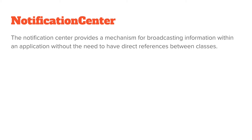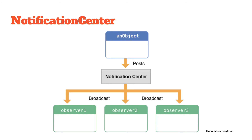The Notification Center provides a mechanism for broadcasting information within an application without the need to have direct references between classes. Say we have an object that wants to notify somebody — or anybody — that there's a notification going on. It posts this notification to a Notification Center, and usually there's only one, though we can have multiple Notification Centers if we need to. This Notification Center keeps track of all the different observers that care about that particular notification. When that notification gets posted, the Notification Center broadcasts it down to each and every observer that has registered for it.